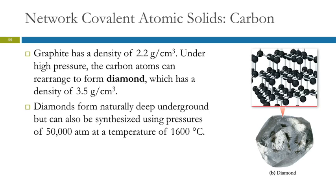Graphite has a density of about 2.2 grams per cubic centimeter. If you put graphite under high pressure, you can get the structure to rearrange and form a diamond. In a diamond, the carbon atoms are bonded in three dimensions, not just two. Diamonds normally form underground over a long period of time, but they can also be made synthetically using pressures of about 50,000 atmospheres and temperatures of about 1,600 degrees Celsius. That's kind of expensive, but so is digging them up.